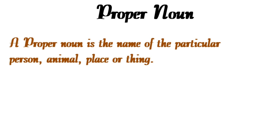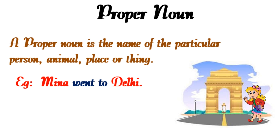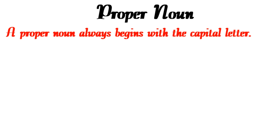A proper noun is the name of a particular person, animal, place, or thing. For example, 'Mina went to Delhi' — here 'Mina' is the name of a particular girl. Similarly, 'Delhi' is the name of a specific city, not just any city.